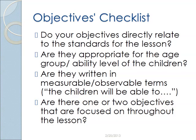You're also going to make sure that your objectives have some other characteristics. Here's a checklist to go through. First, do your objectives directly relate to the standards for the lesson? That's where we started. Second, are they appropriate for the age group or ability level of the children? For the most part, the standards are going to help you figure out whether they're appropriate for the age group.